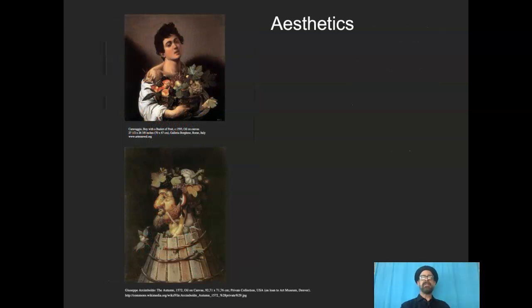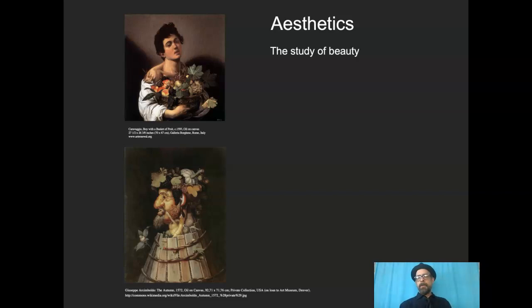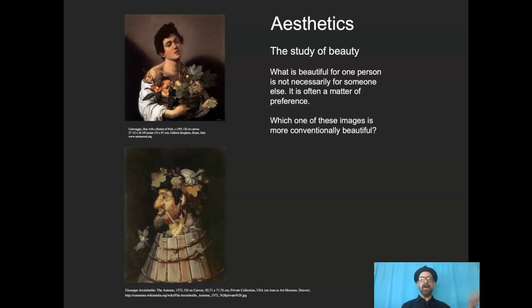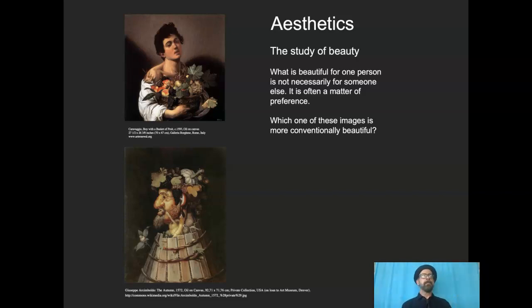Aesthetics — this is your five-dollar word. You're in college; you should know this. Aesthetics is essentially the study of beauty, a branch of philosophy. You've often heard 'beauty is in the eye of the beholder' — what is beautiful for one is not necessarily so for someone else; it's often a matter of preference. So if we look at these two images: the one on top is Caravaggio, the great master, and the one below is Arcimboldo, a great painter in his own right. If we ask a hundred people which one is beautiful, more than likely they'll choose the Caravaggio — it's more conventionally beautiful. But there'll be a few of us who gravitate towards the Arcimboldo; it's beautiful in a different way.